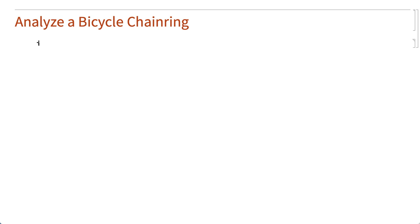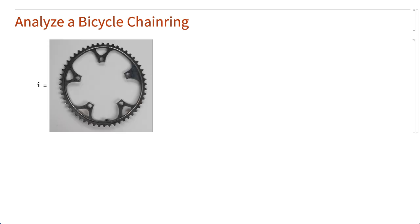For the first example, here is an image of a front gear from a bicycle called a bicycle chainring. The image processing task is to determine the exact shape of the ring, how far it is from perfectly round, and to count the number of teeth on the gear.